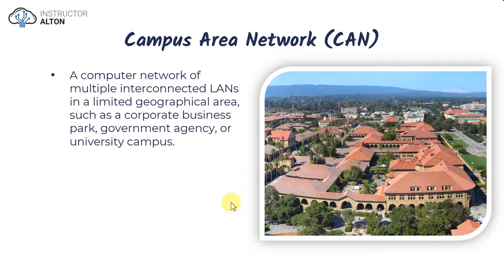Moving up in size, we get to the campus area network. Just like its name implies, it deals with networks for a campus — it could be a school campus or a business campus such as Facebook or Google, where a company has three, four, or five buildings together on a site that they own.